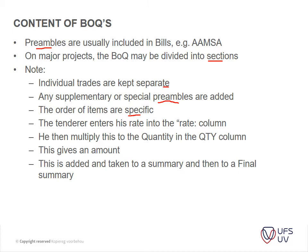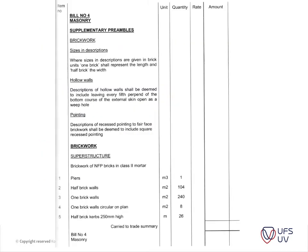The tenderer enters his rate into the rate column, multiplies the quantity in the quantity column by this rate, and it gives an amount on the right-hand side. This is added and taken to the final summary. I'll show you now on the layout. All of your bills will have this same layout with your item number, description, unit, quantity, rate, and amount — and your supplementary preambles for anything you want to add.